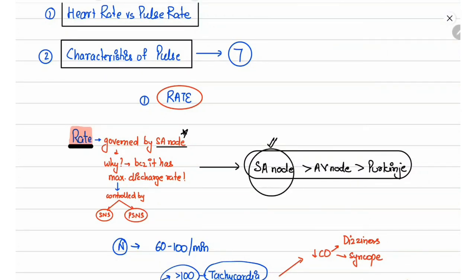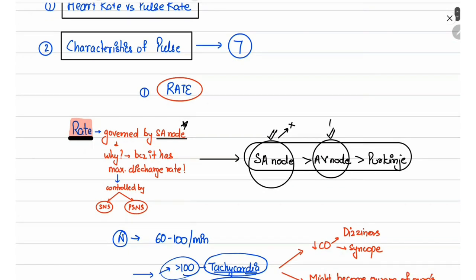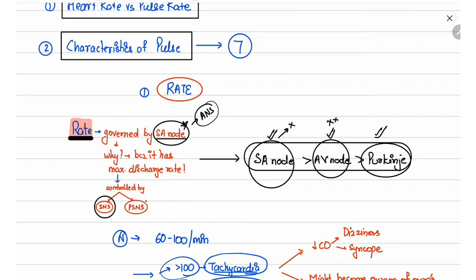If the SA node gets damaged, the next in line is the AV node — it will take command and govern the rate. If both the SA node and AV node get damaged, the Purkinje fibers will take over. The SA node is mainly controlled by the autonomic nervous system: the sympathetic nervous system increases the rate of discharge, whereas the parasympathetic nervous system decreases it.